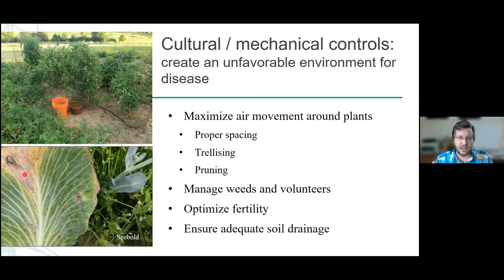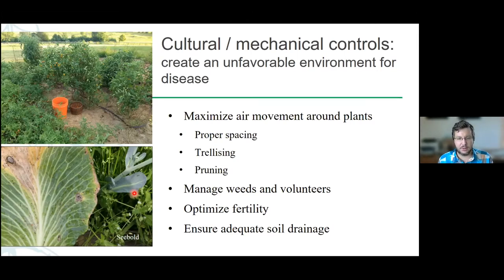This bottom photo here is just alternate leaf blight. You can see all this chickweed growing around this cabbage. When you keep heavy weeds around low crops like this, they're not only competing and sucking up water and fertilizer, but also holding moisture up against that leaf, keeping it from drying out as much.